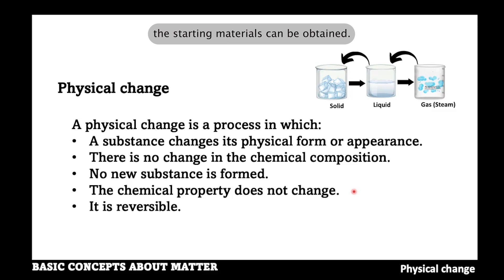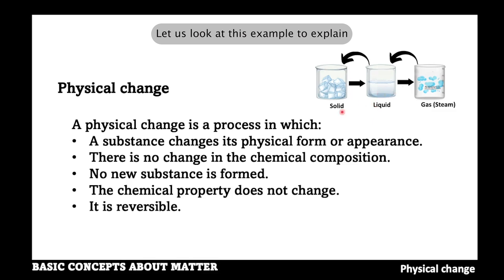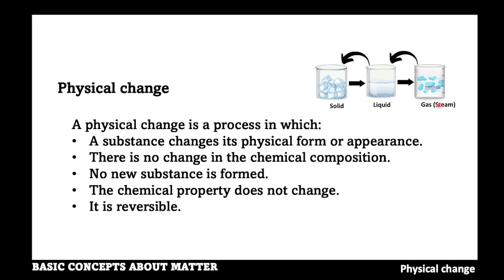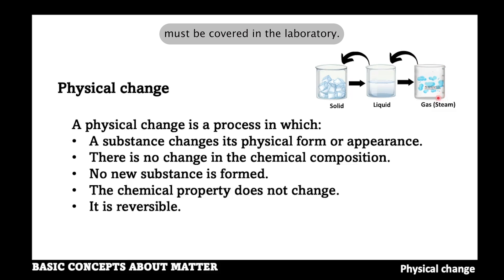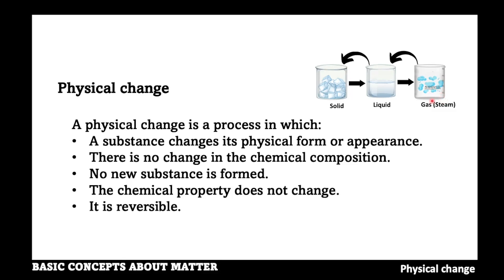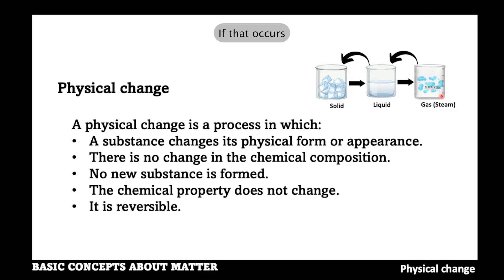To explain the reversible process of physical change: the last beaker containing vapor or steam must be covered in the laboratory, otherwise the steam will escape into the atmosphere because it is a gaseous state. If that occurs, the process cannot be reversed.